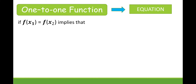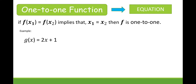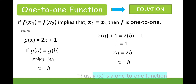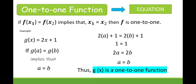Now, how do we determine from an equation whether it is one-to-one? If f(x₁) = f(x₂) implies that x₁ = x₂, then f is one-to-one. For example, g(x) = 2x + 1. If g(a) = g(b), then 2a + 1 = 2b + 1, which gives 2a = 2b, and therefore a = b. Since a = b, then g(x) is a one-to-one function.